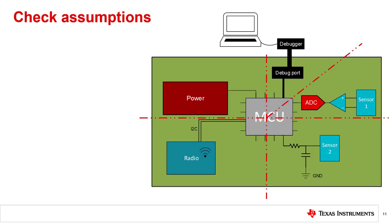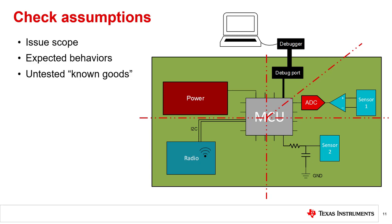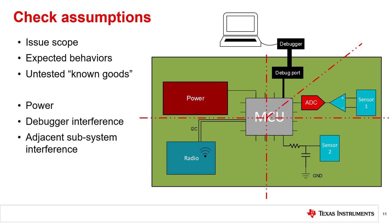Checking assumptions is another key debug concept. Through our other concepts, we have both explicitly and implicitly made assumptions about the behavior of the system and our debug efforts. These assumptions could have included the scope of the issue being tested, its expected behaviors, and known goods that we have not explicitly tested. As you break down the problem, you may have disregarded the power subsystem and possible debugger or adjacent subsystem interference. Test these avenues and learn of their effects on your targeted subsystem.